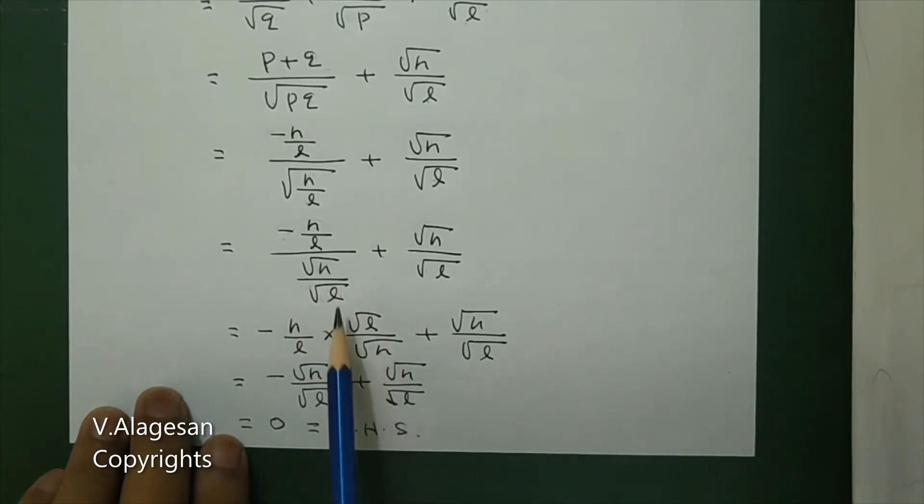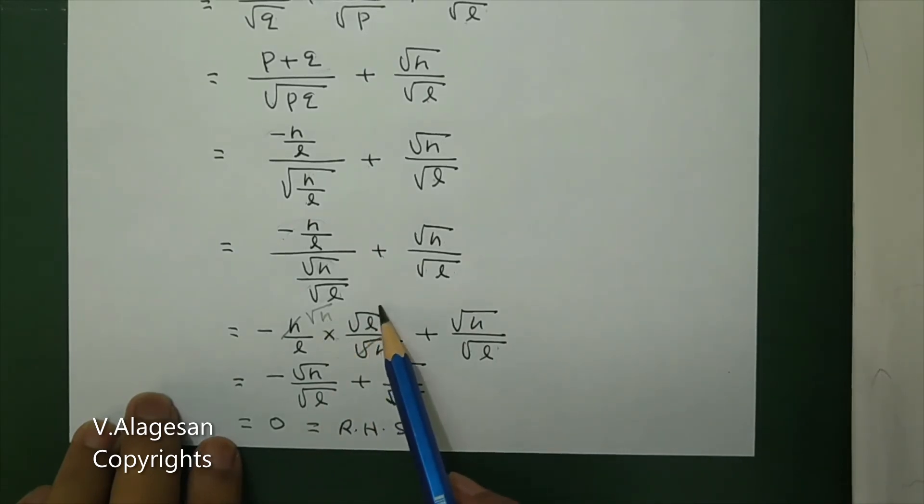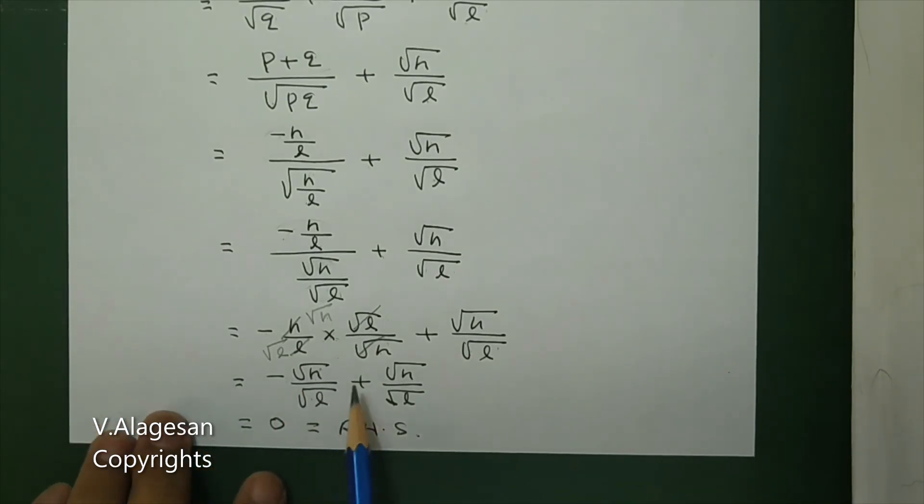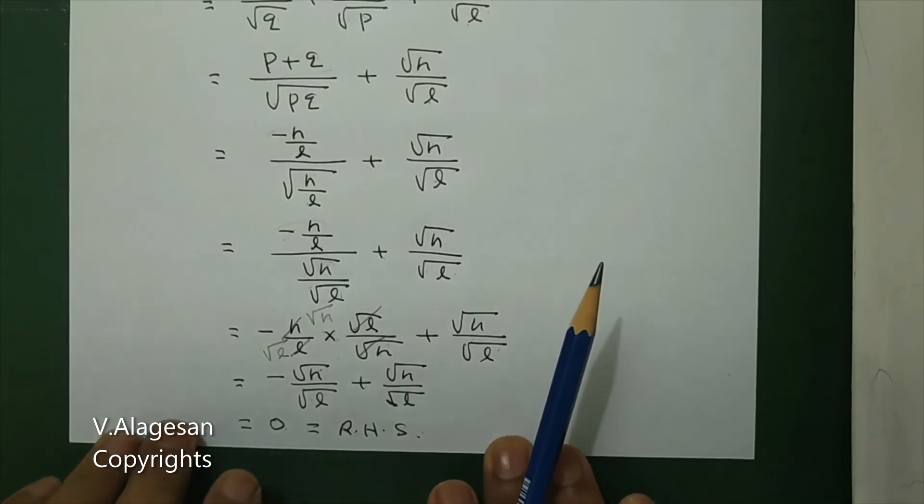After substitution: √n and √l cancel, giving -√n/√l - √n/√l + √n/√l. These cancel, so equal to 0, which is the RHS. That's all. Can you understand this problem?